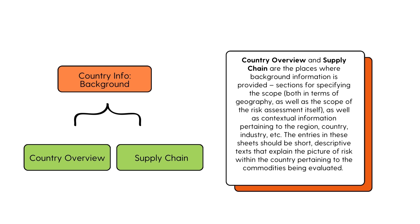Next, we have the Country Information Background tabs. These include the Country Overview and the Supply Chain tabs, which are the places where background information is provided. There are sections for specifying the scope in terms of geographical scale, source type, and the scope of the risk assessment itself, as well as contextual information pertaining to the region, country, industry, etc. The entries in these sheets should be short, descriptive texts that explain the picture of risk within the country pertaining to the commodities being evaluated.